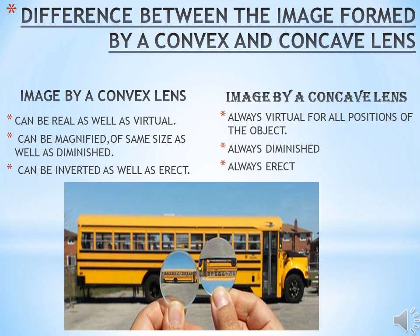The second point: for a convex lens, the image can be magnified, of the same size, or diminished. It is magnified if the object lies before 2F, the same size if the object is at 2F, and diminished if the object is beyond 2F. Whereas in the case of a concave lens, the image is always diminished. Also, for a convex lens, the image can be inverted or erect - inverted if the image is formed beyond the focus, and erect if the object is within the focal distance.